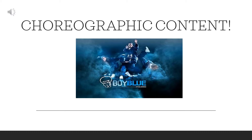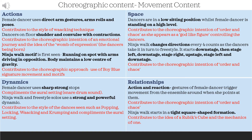Let's now have a look at choreographic content — specifically movement content in Section 1. Movement content includes actions, space, dynamics and relationships; you could use the acronym RADS to remember this. I really encourage you to come up with your own examples when watching. Starting with actions: the female dancer uses direct arm gestures, arm rolls and poses. This contributes to the style of whacking technique, as these are specific actions seen in that style.